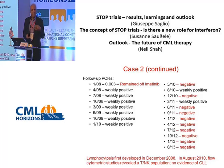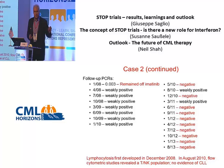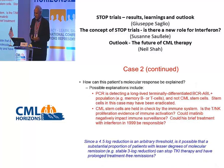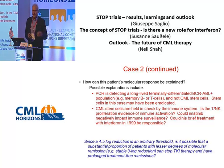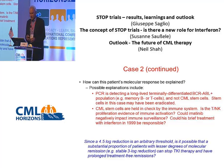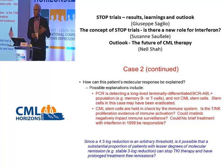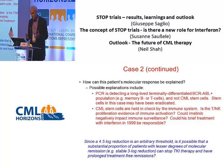This raises the question: could imatinib be a double-edged sword? Could it be driving down the disease burden but simultaneously suppressing any immune-mediated means to control the disease? In trying to explain this patient's course, one formal possibility — which we think is probably not likely — is that what we're detecting over time is not actually the disease in stem cells, but in long-lived T cells, which we know can carry BCR-ABL and may persist for years. It's difficult to prove or disprove that.